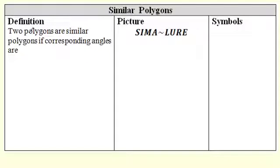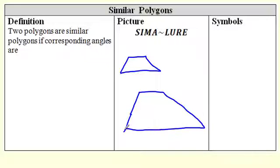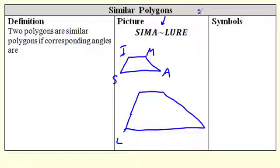Let's get the formal definition. This entire chapter is a quick one — only three sections. Two polygons are similar polygons if corresponding angles are congruent. Let's take a look. If I draw a weird trapezoid and draw that same exact trapezoid only bigger, this is the symbol for similar — like the congruent symbol but we just take the top off.